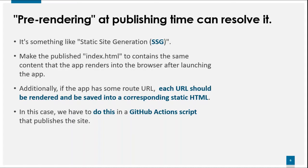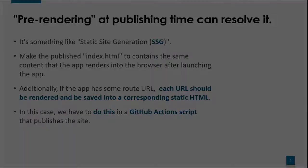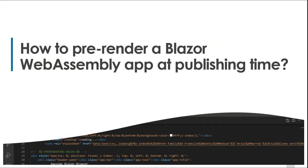Of course, I have to pre-render to static HTML files not only the root index content, but also all other routed URLs. And I also have to do the pre-rendering task in a GitHub Actions script. To resolve this, I researched the internet for tools or articles about doing publishing-time pre-rendering of a Blazor WASM app. Fortunately, I found some good resources that already existed on the internet.